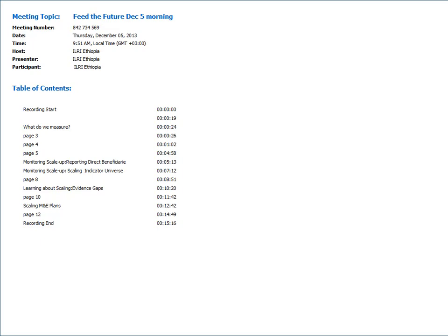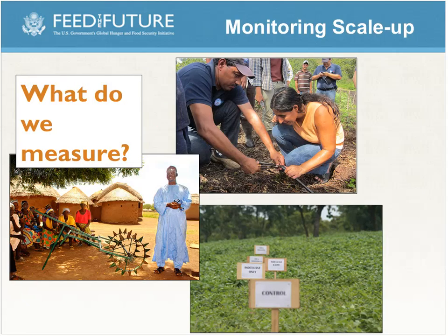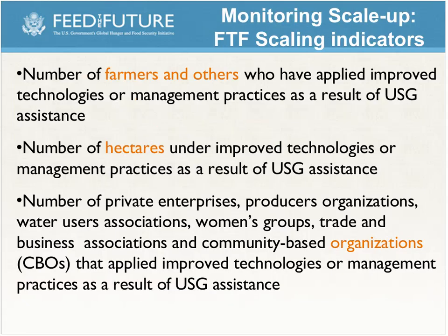The first indicator is disaggregated by technology type, measuring the number of vectors managed under individual improved technologies or practices. It also measures the number of vectors being managed by both male and female farmers that are applying improved technologies. Additionally, it measures the number of vectors managed with an improved technology or practice for the first time — which is significant, going back to some of Brett's discussion about the timeframe involved with adoption.